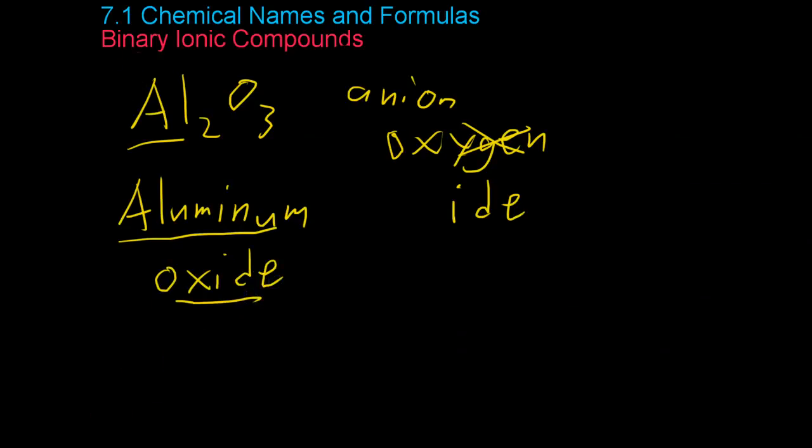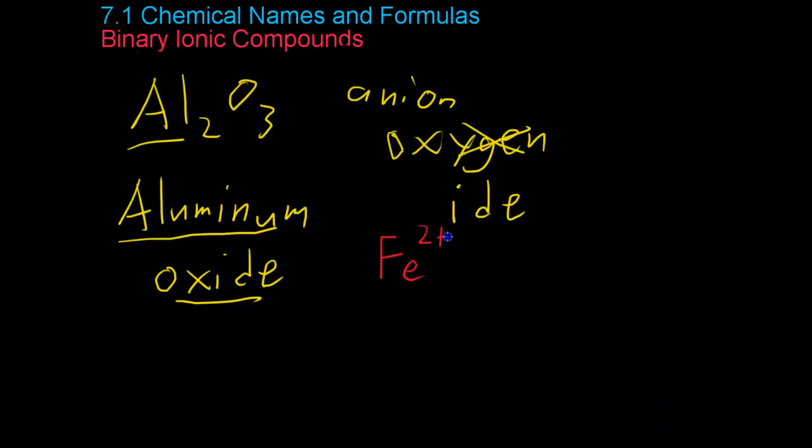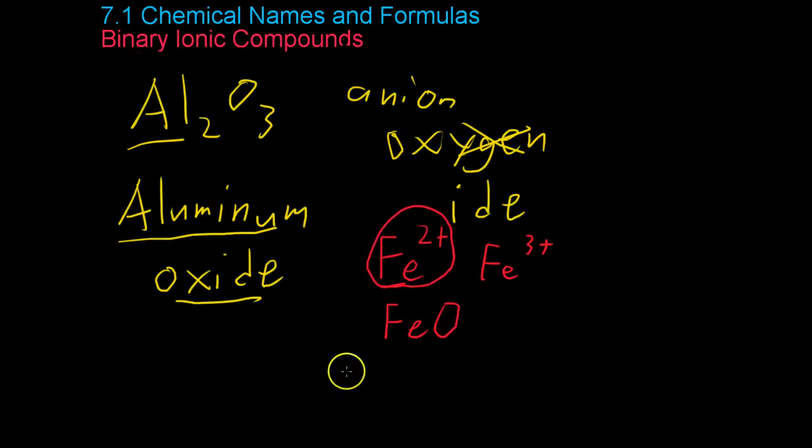Now, this system isn't as straightforward when you get two elements like iron, which can form two cations, that is Fe2+ and Fe3+. So what you do, let's say you had iron oxide. What you would have to do, in this case you're using the Fe2+ ion.